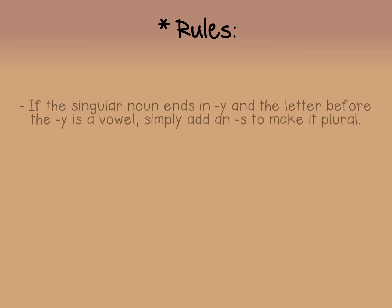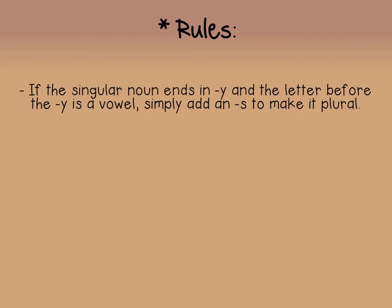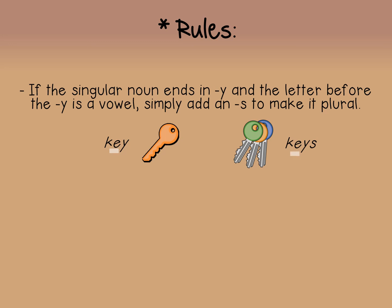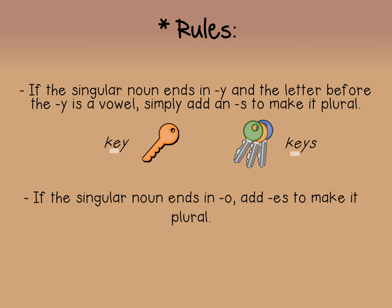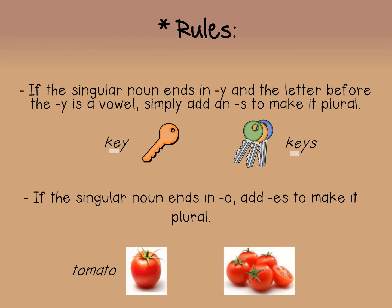The next rule: if the singular noun ends in Y and the letter before the Y is a vowel, you simply add an S to make it plural. The following rule: if the singular noun ends in O, you add -ES to make it plural. For example, 'tomato' in plural becomes 'tomatoes.'